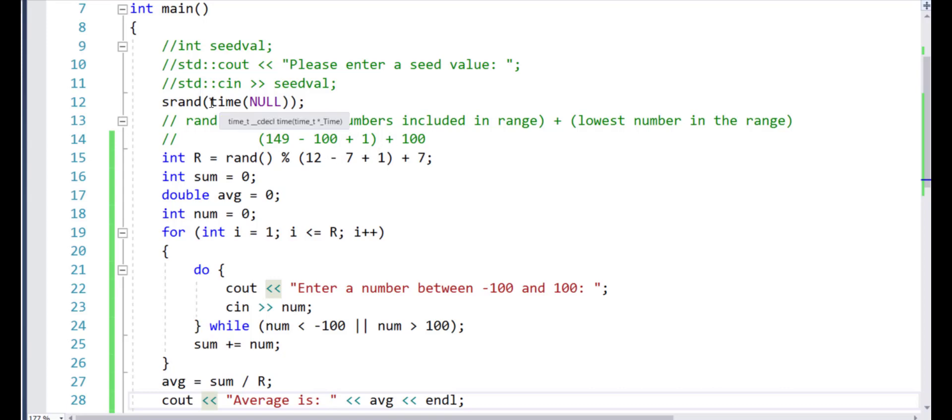So I'm using srand time, because this would allow me to generate a random number every time. Otherwise, I'll be locked into one random number. That's how C++ is.